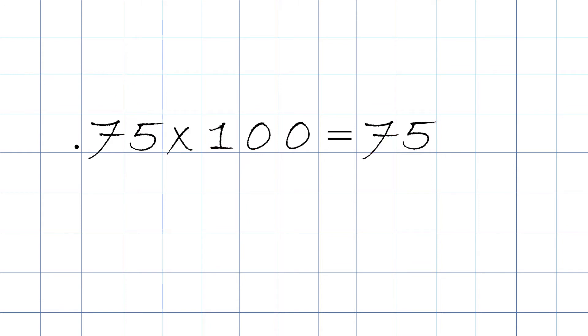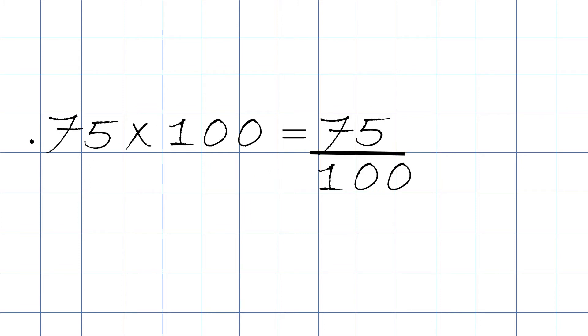We then take the 75 and we make it into a fraction. And since we multiplied 0.75 times 100, we're going to make the hundredth the denominator. We put it right here on the bottom.